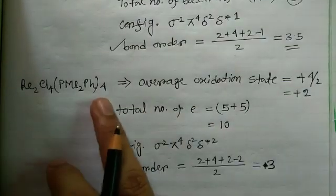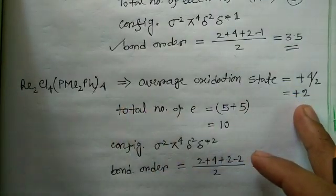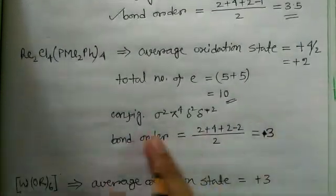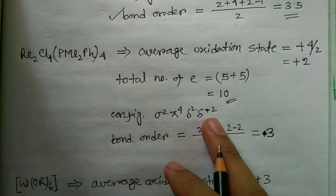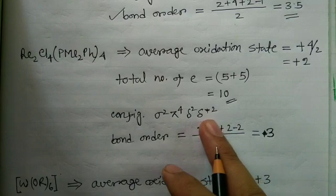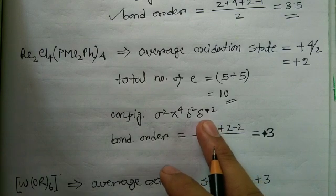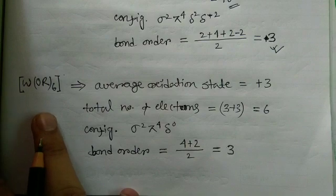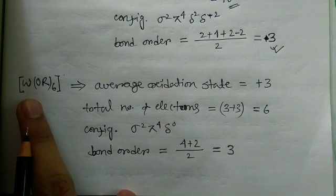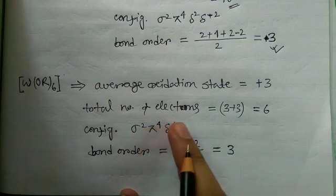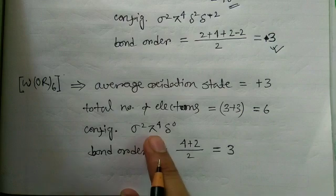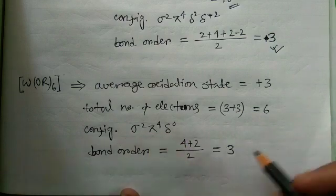Another rhenium complex has an oxidation state of +2 for each rhenium, giving a total of 10 electrons, filled as σ²π⁴δ²δ*². With 2 electrons in the antibonding delta star orbital, we subtract 2, giving bond order = (2 + 4 + 2 − 2) / 2 = 3. For the final example with tungsten, the oxidation state is +3, each tungsten has 3 electrons, total 6 electrons filled as σ²π⁴δ⁰, giving a bond order of 3.